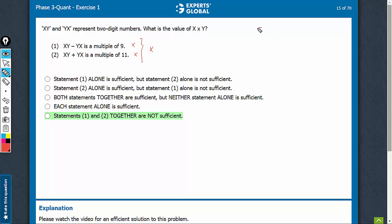Take any example, 53 and 35. See the difference is 18, which is a multiple of 9, and the sum is 88, which is a multiple of 11.